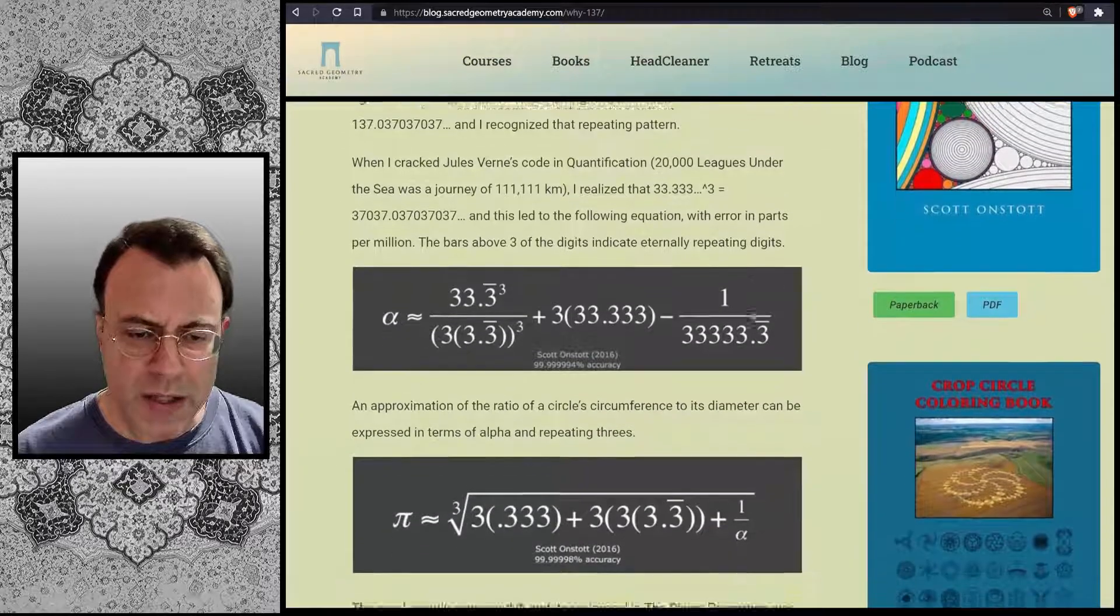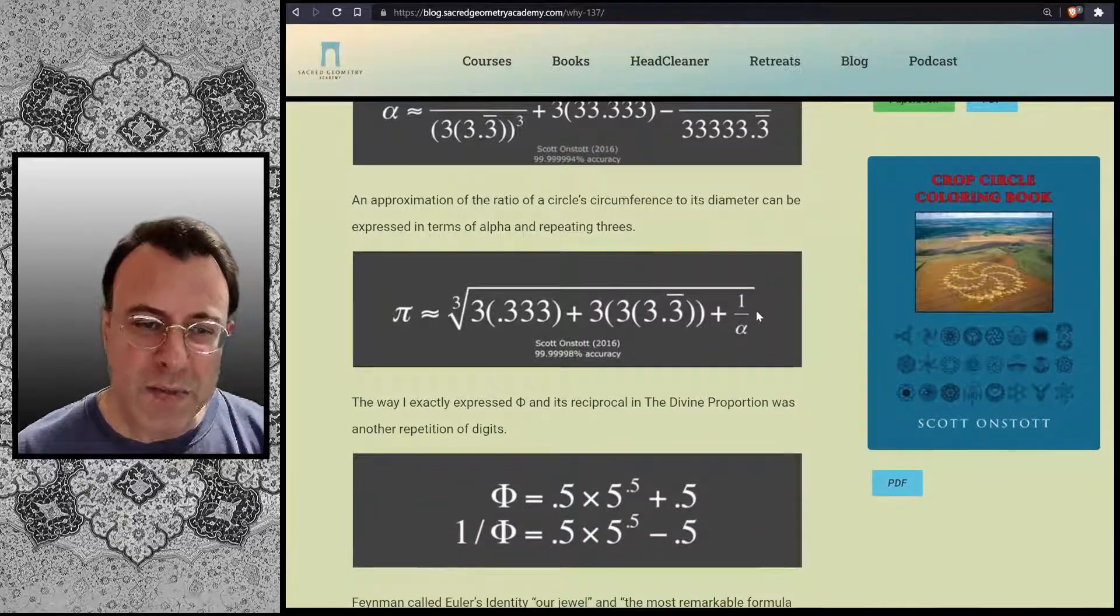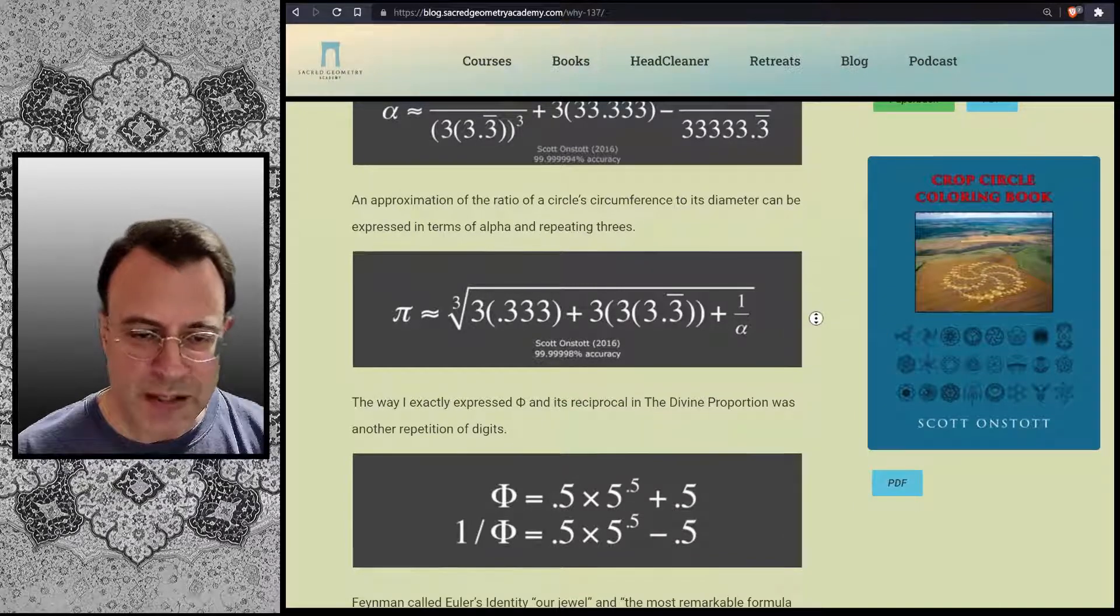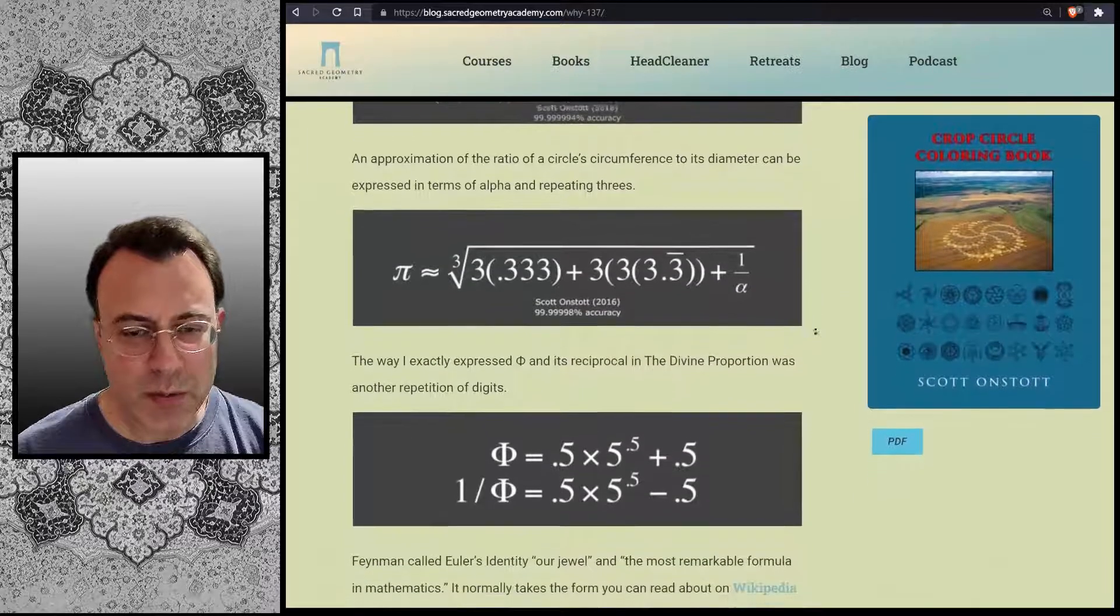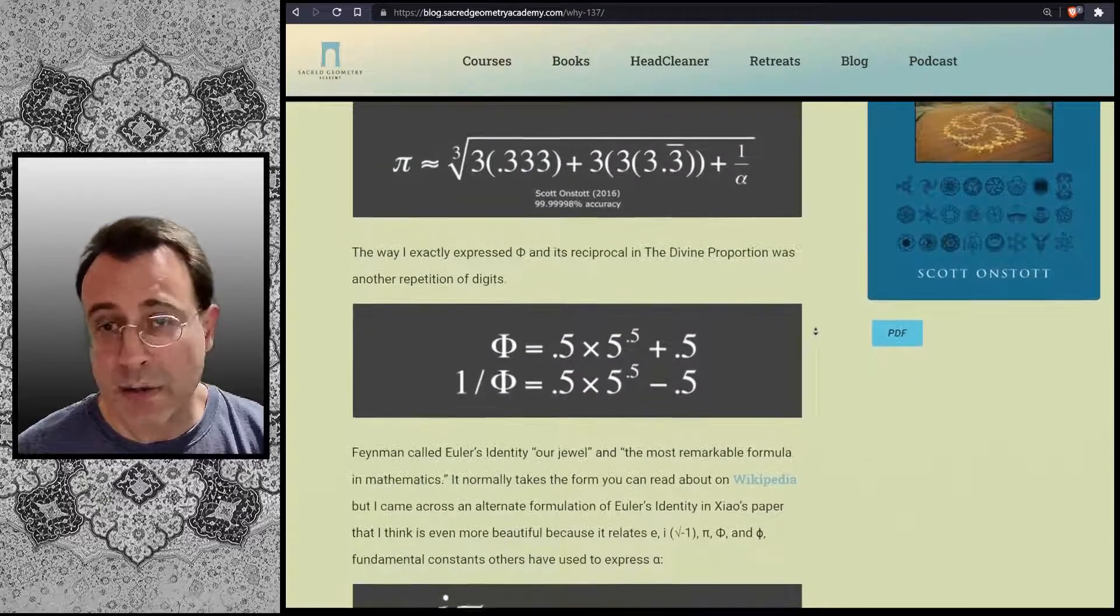An approximation of the ratio of a circle's circumference to its diameter can be expressed in terms of alpha and repeating threes. The way I exactly expressed phi and its reciprocal in The Divine Proportion was another repetition of digits, but in that case they were fives.